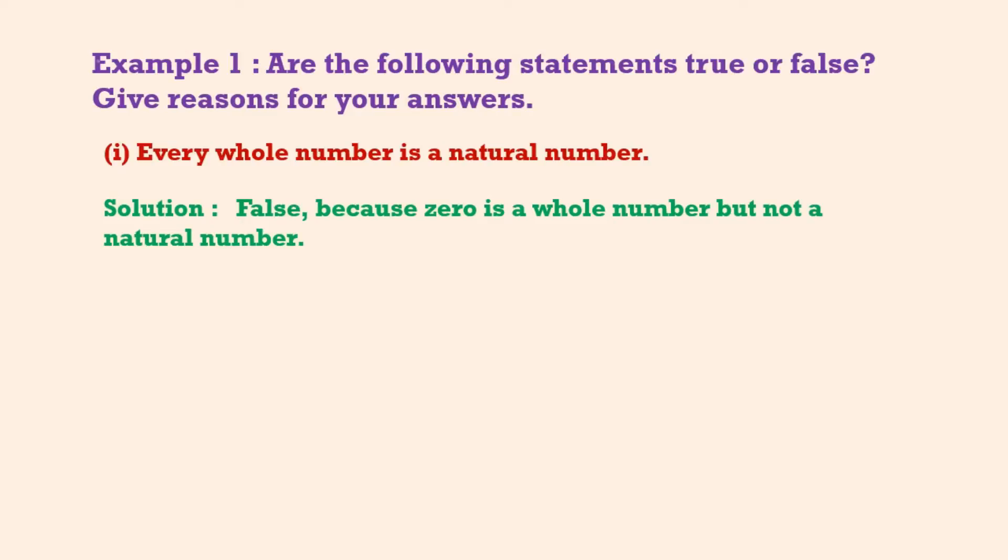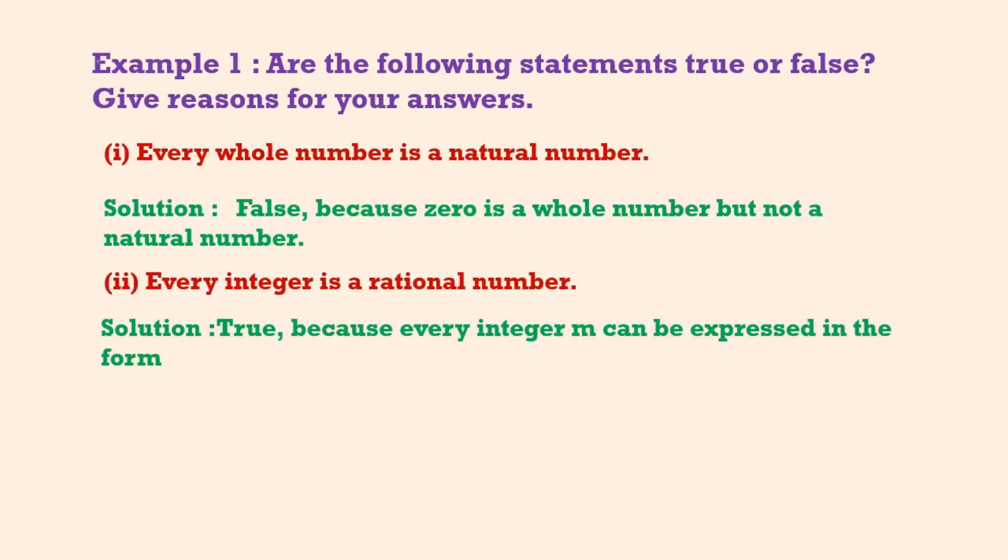Second one - every integer is a rational number. Solution: True, because every integer m can be expressed in the form m/1 and so it is a rational number. Three - every rational number is an integer. Solution: False, because 3/5 is not an integer.